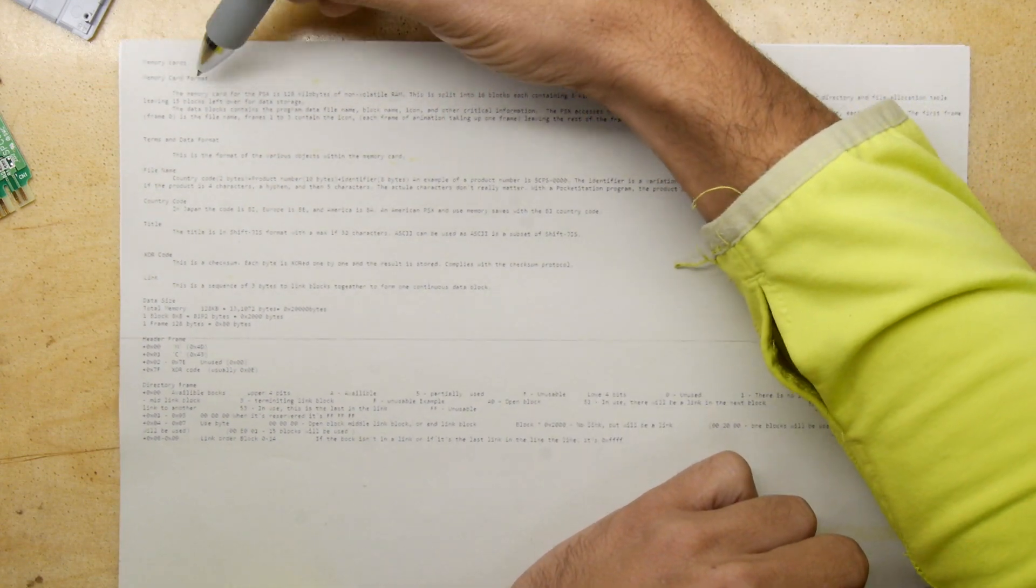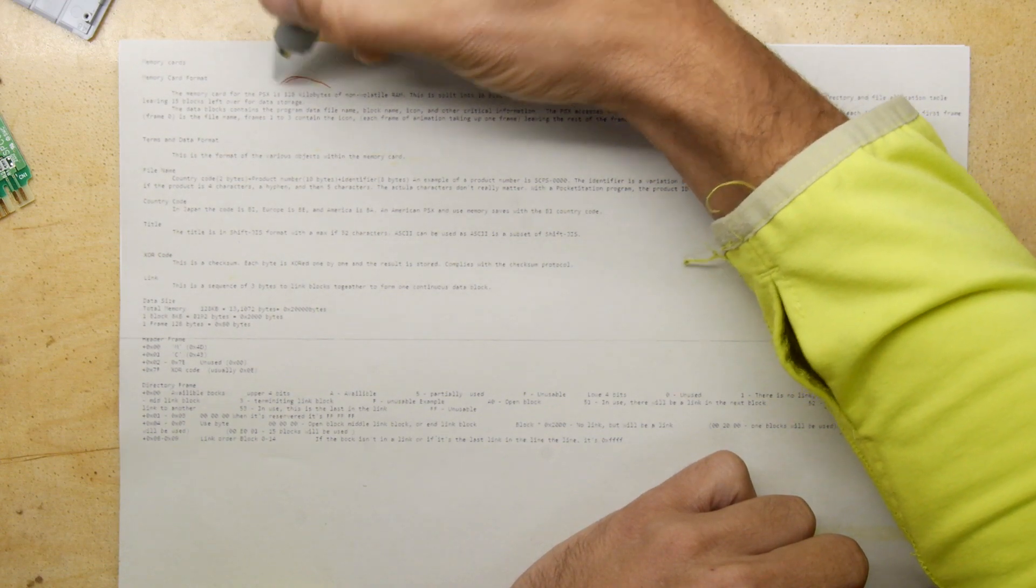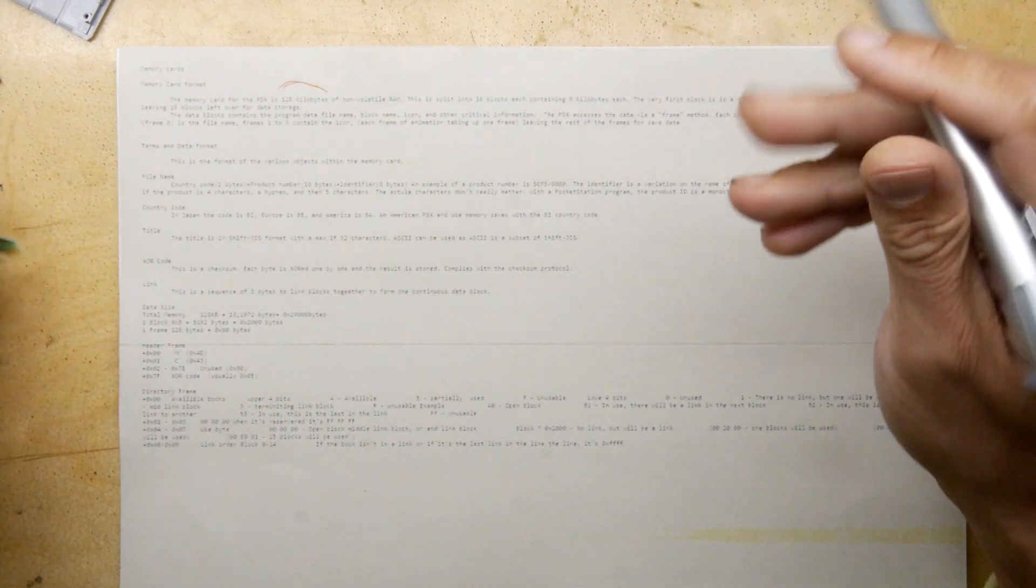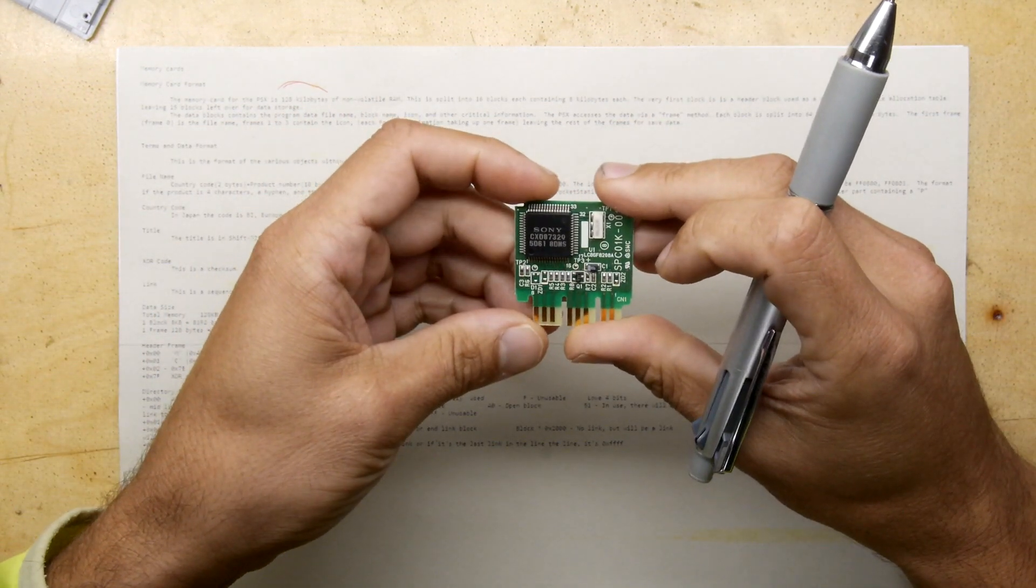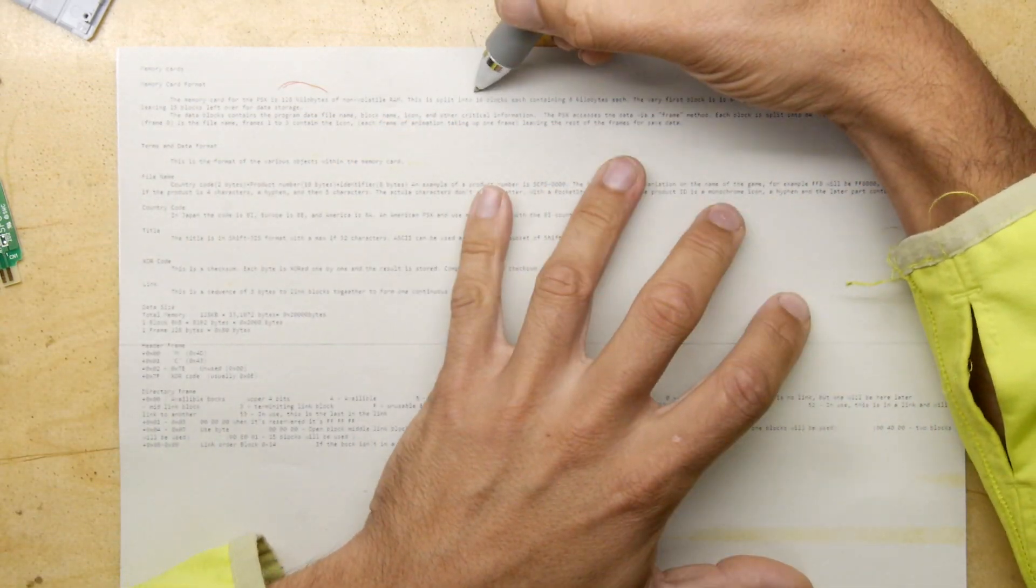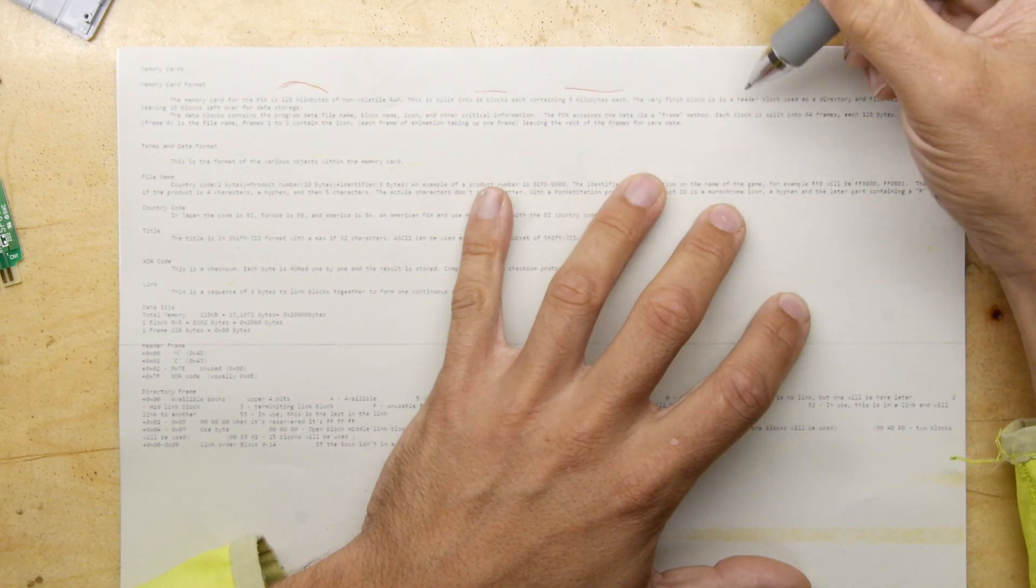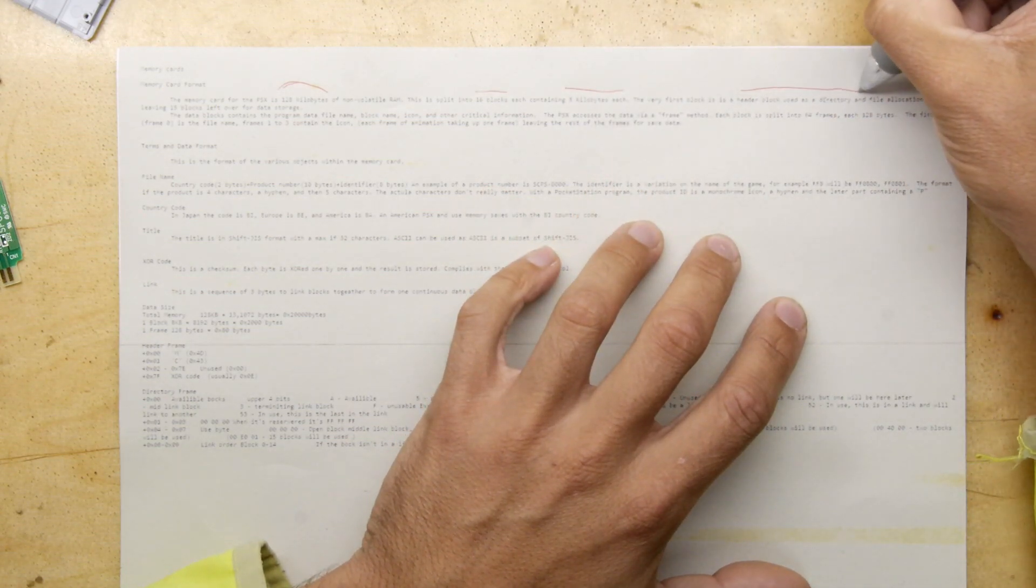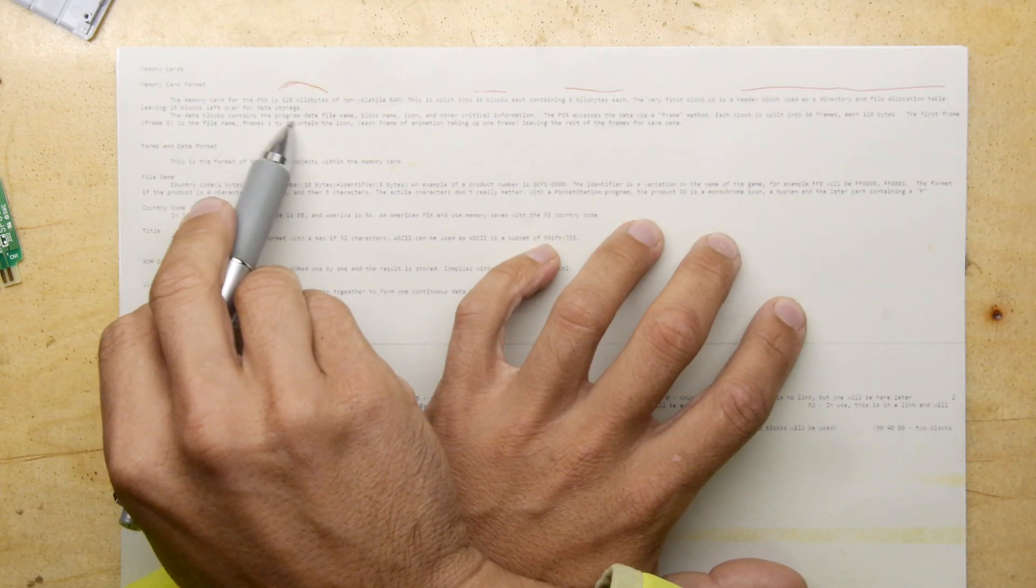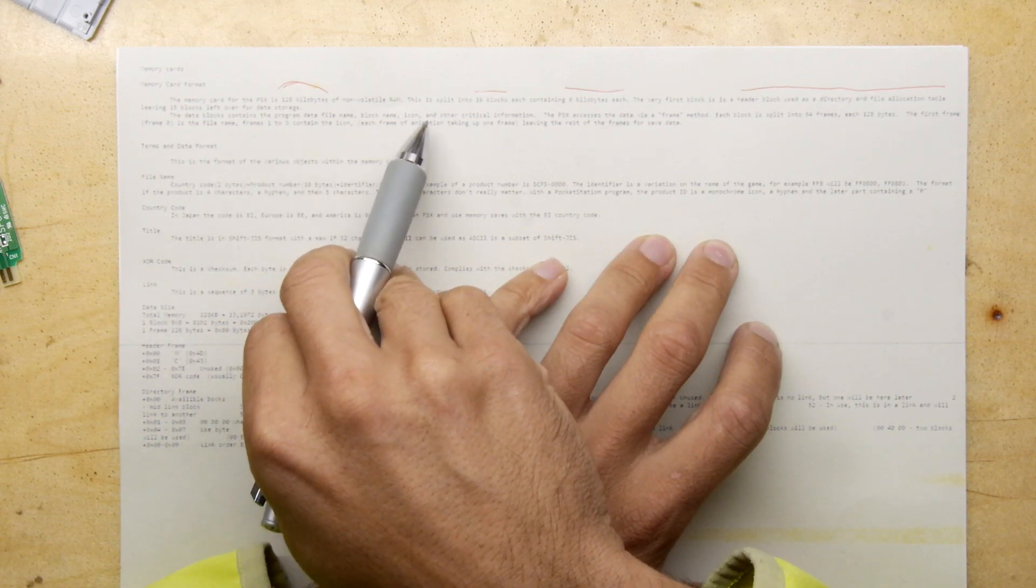But it says here the memory card for the PlayStation is 128 kilobytes of non-volatile RAM. 128 kilobytes—it seems really tiny, but okay. This is split into 16 blocks, each containing 8 kilobytes. The first block is the header block and uses directory or file allocation tables—they've got FAT on it—leaving 15 blocks left over for data storage.